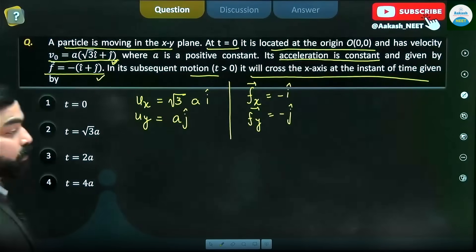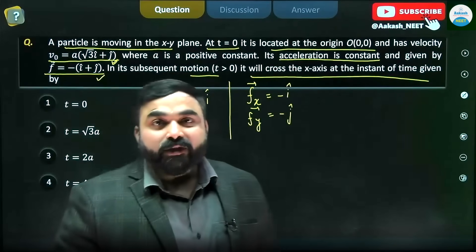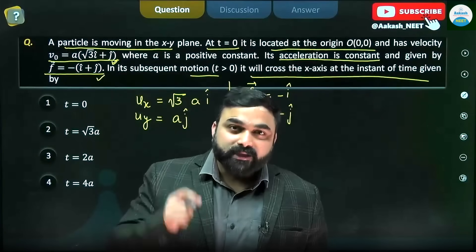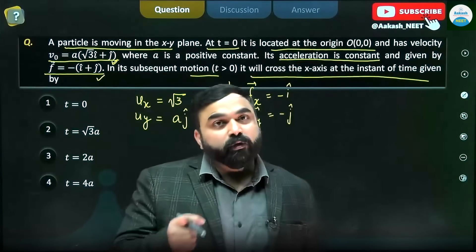Now we know that when the particle will be crossing the x-axis, its y-coordinate will be equal to zero.